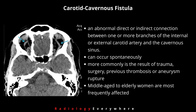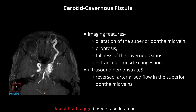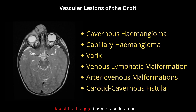The last vascular lesion is carotid cavernous fistula (CCF): an abnormal direct or indirect connection between one or more branches of the internal or external carotid artery and the cavernous sinus. It can occur spontaneously or in the context of collagen vascular disease, but is commonly due to trauma, surgery, previous thrombosis, or aneurysm rupture. Middle-aged to elderly women are more frequently affected. Clinical findings include pulsatile exophthalmos, conjunctival injection, and auscultated bruit. On imaging, dilatation of the superior ophthalmic vein, proptosis, fullness of the cavernous sinus, and extraocular muscle congestion are seen. Ultrasound may demonstrate reverse arterialized flow in the superior ophthalmic veins.